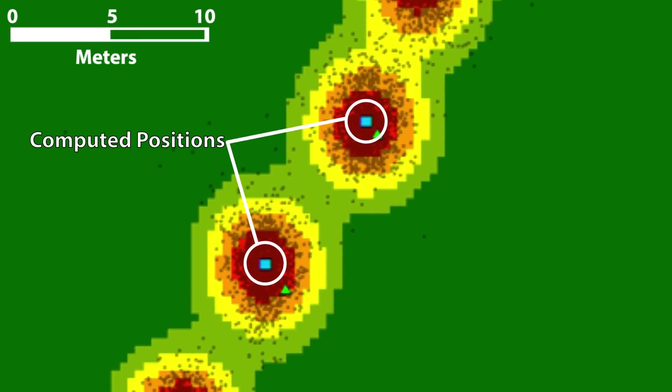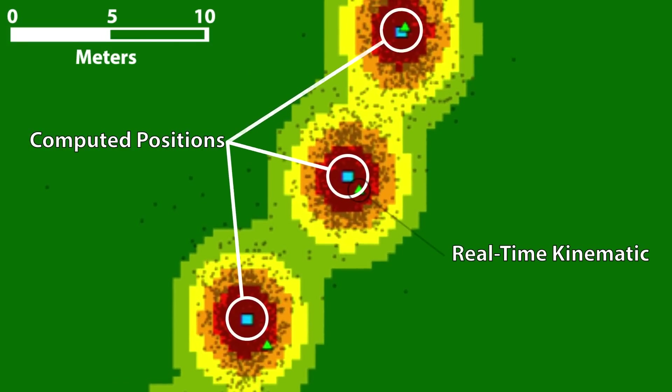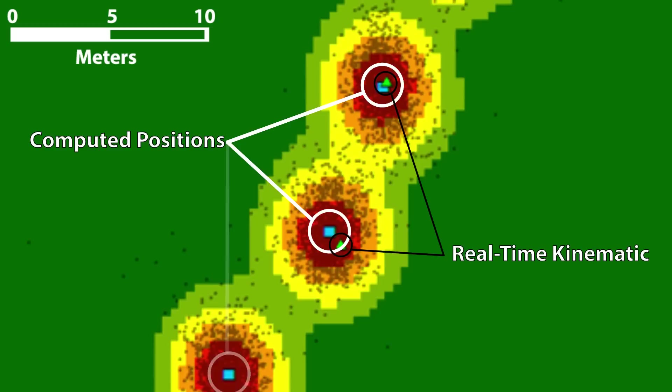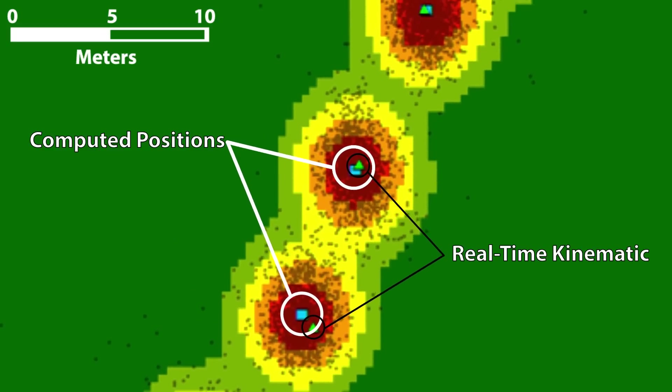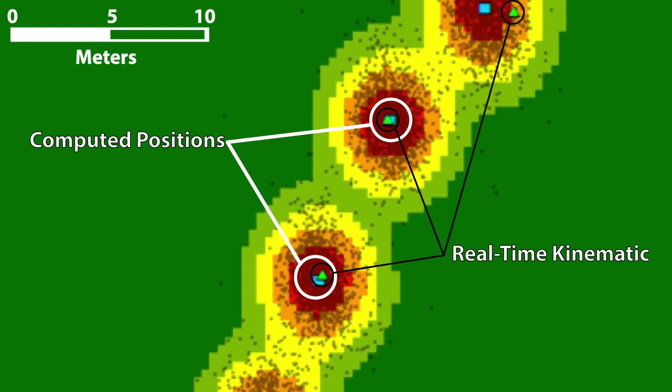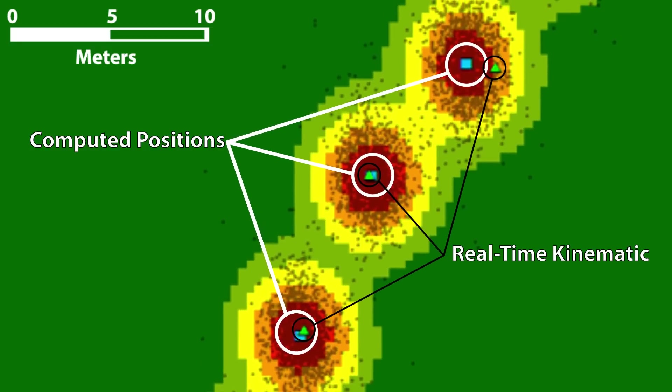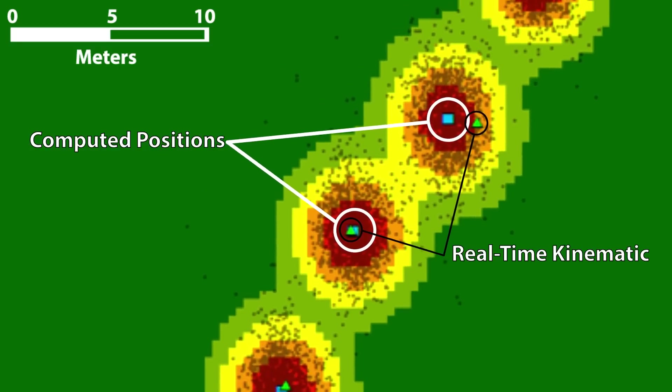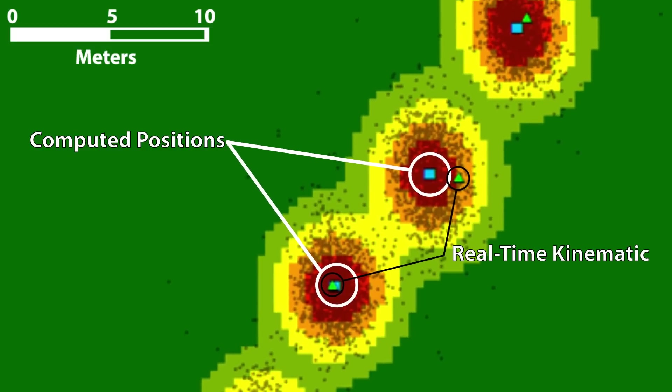Here, the blue square shows the computed final position of the node, and the green triangle shows the RTK value that was surveyed to a very high degree of accuracy in the field. You'll notice discrepancies of around a meter, in some cases less than a meter, and up to two meters in this diagram.